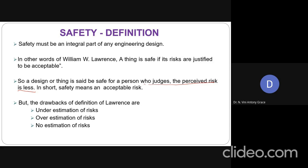Unfortunately, this definition of safety by Lawrence has some drawbacks: underestimation of risks, overestimation of risk, and no estimation of risk. So far, understanding what safety is is very simple — the state of being safe is called safety, and it is completely based on the person's perception of how he views the safety of the product.